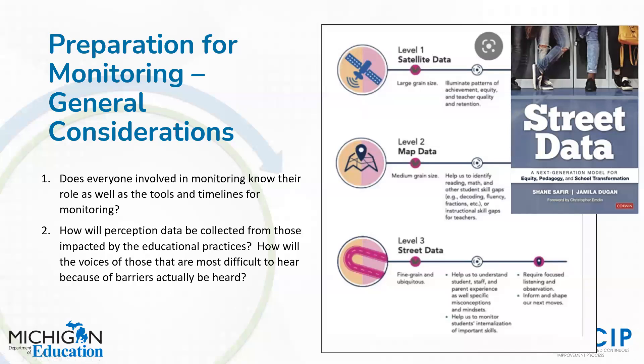Another piece worth calling out is the idea of perception data. We need to collect all the other kinds of data — the satellite data that are typically state test scores, the larger grain-size types of things, and more granular classroom and individual student data. But it's really important that we also collect perception data from those who are being impacted by the plan. We want to make sure all voices are heard. One way to do that is through a survey, but the better way is to actually have conversations with those voices. A big question is: do we have a way to collect that kind of data as part of our monitoring process?